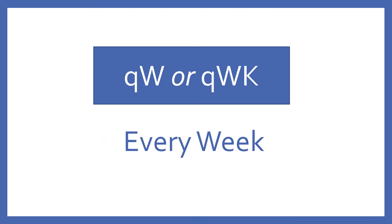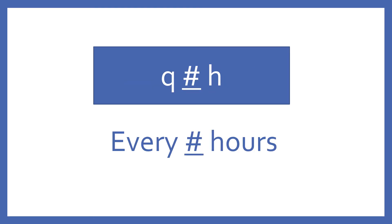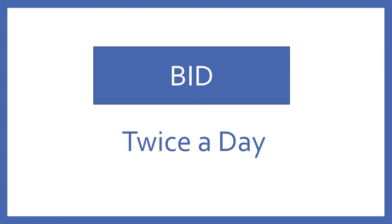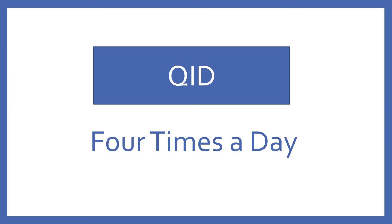QW or QWK: every week. QMO: every month. Q number H: every number of hours. Q number degree sign: every number of hours. BID: twice a day. TID: three times a day. QID: four times a day.